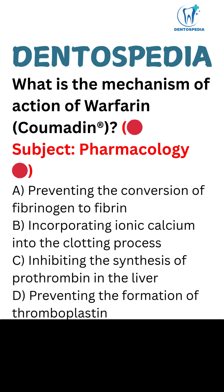What is the mechanism of action of warfarin, coumadin? Option A: Preventing the conversion of fibrinogen to fibrin. Option B: Incorporating ionic calcium into the clotting process. Option C: Inhibiting the synthesis of prothrombin in the liver. Option D: Preventing the formation of thromboplastin.